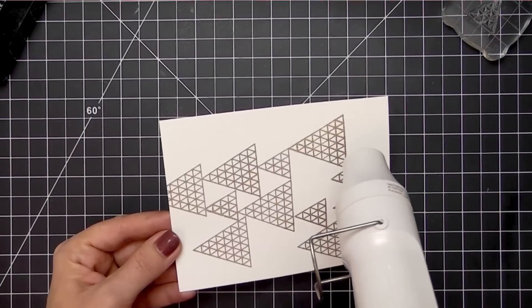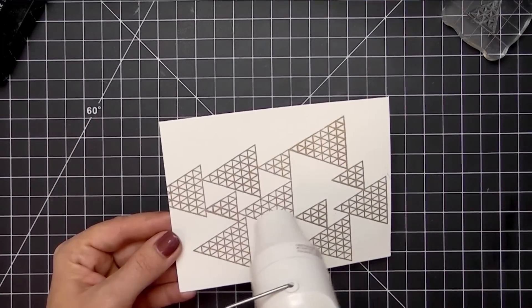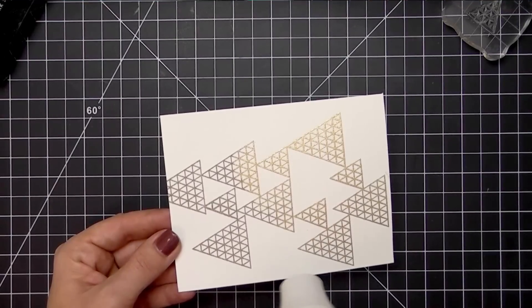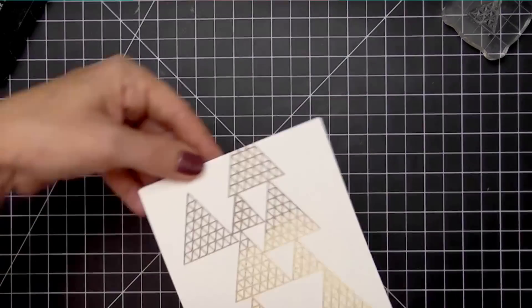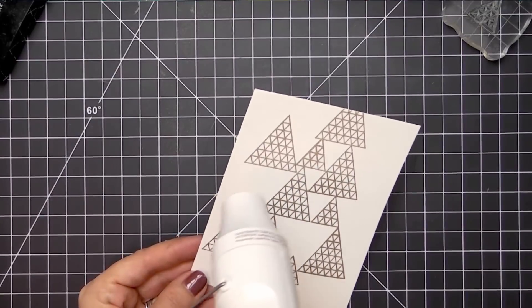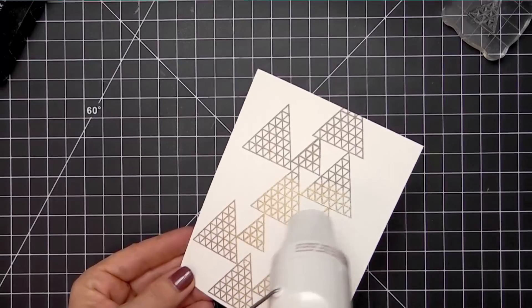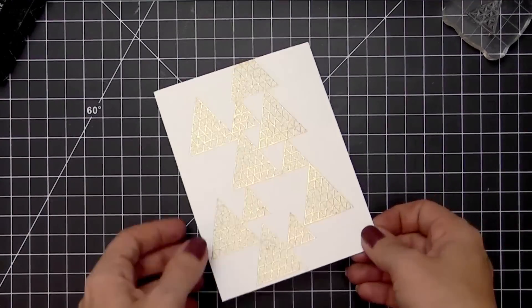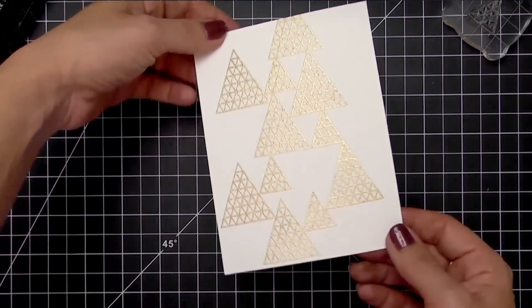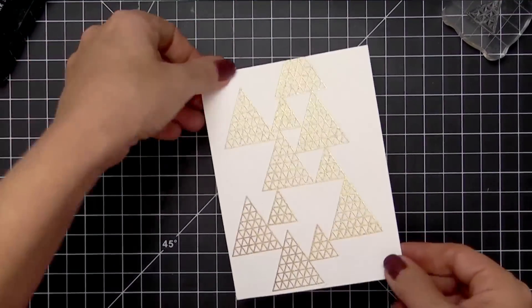Then you'll just use your heat tool to completely melt all of the embossing powder. As this melts, it will turn from that flat brownish color to this high-shine gold. Remember it helps to heat your gun up for a couple seconds before you bring it to your paper, and make sure you keep your gun moving while you're heating it.